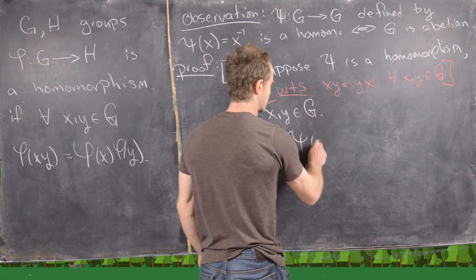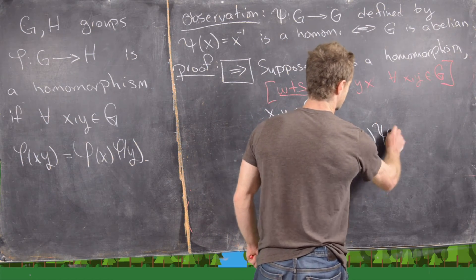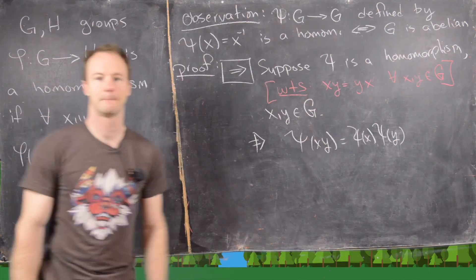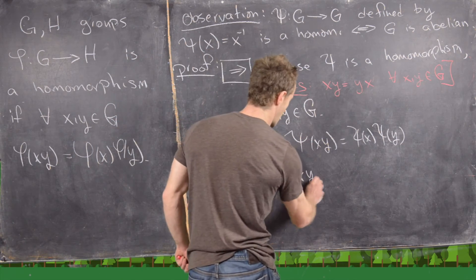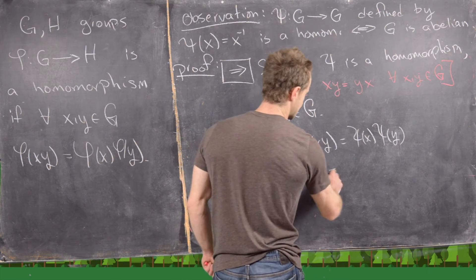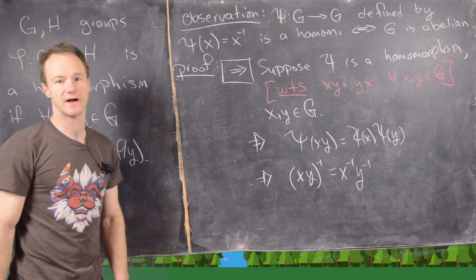That means we can write psi of xy equals psi of x, psi of y. But notice what that is going to give us is xy quantity inverse equals x inverse y inverse.